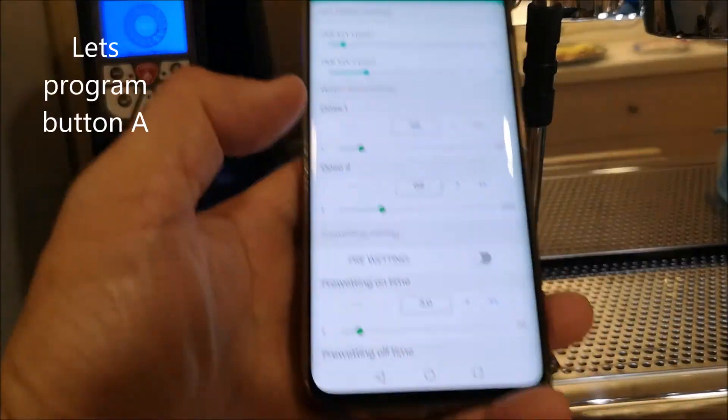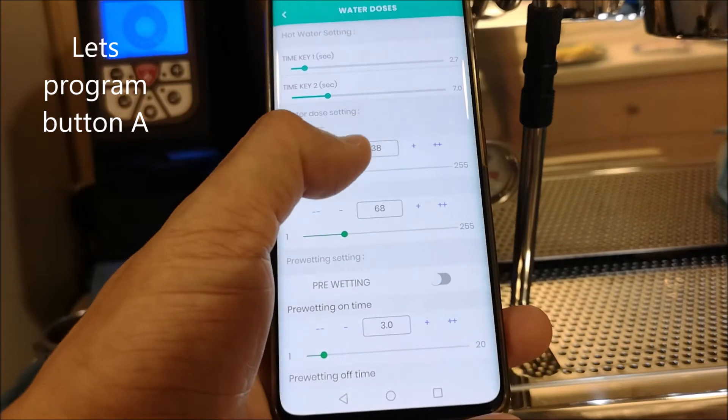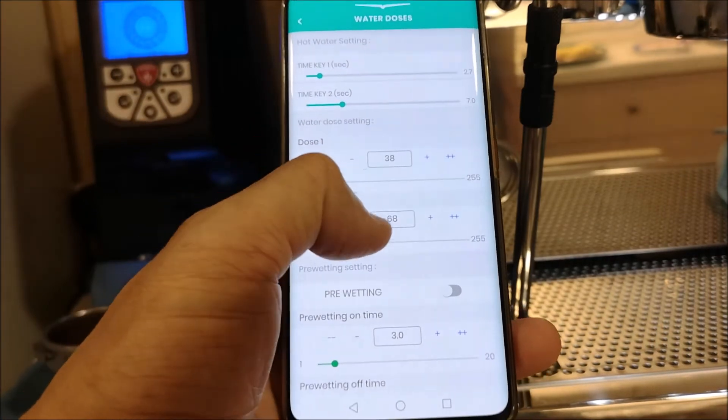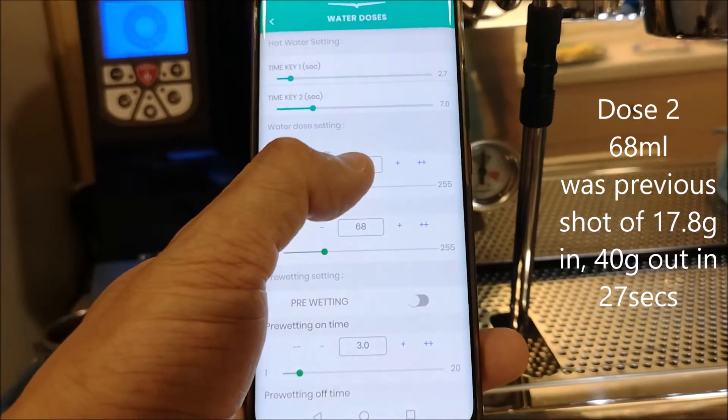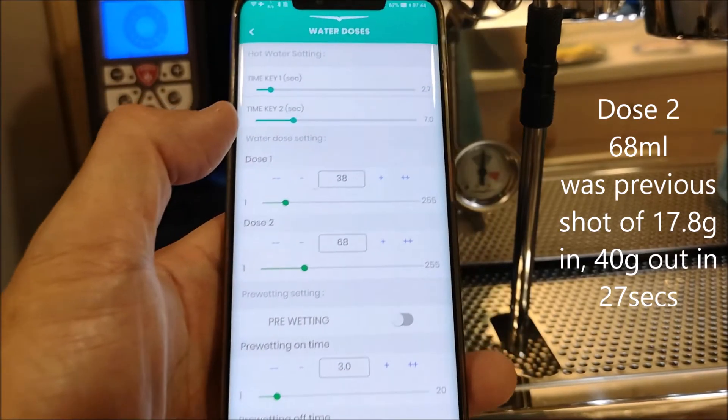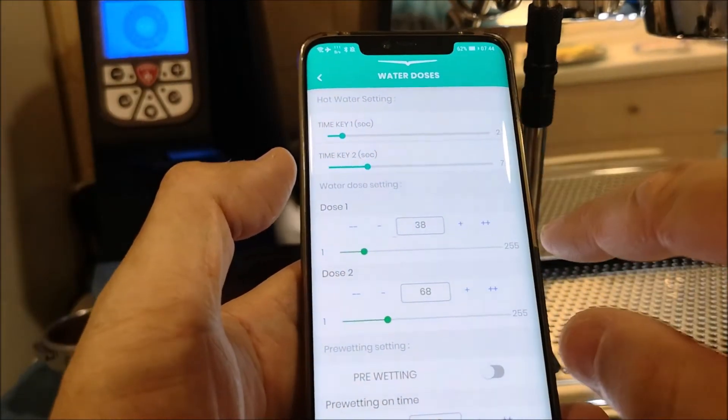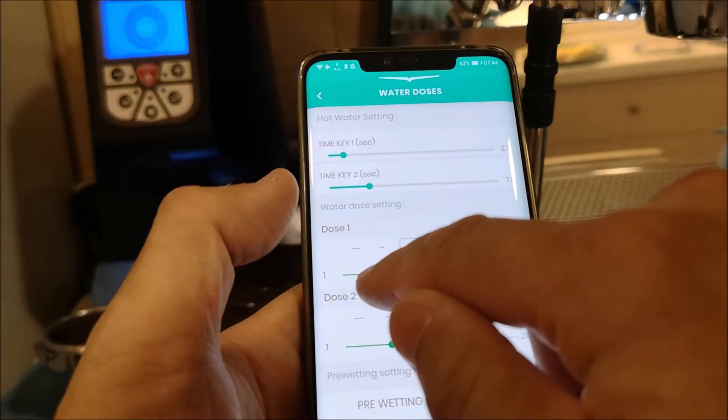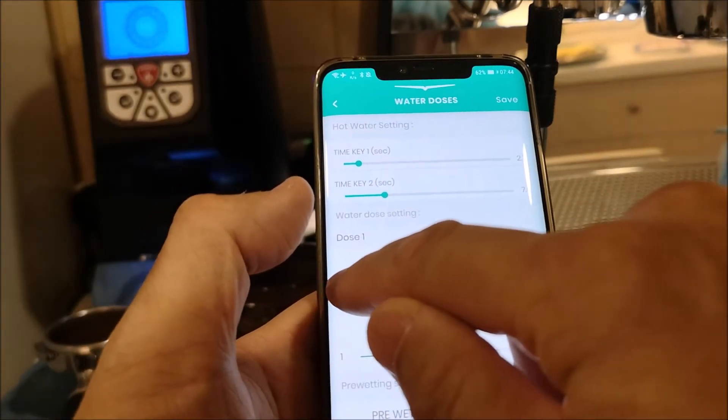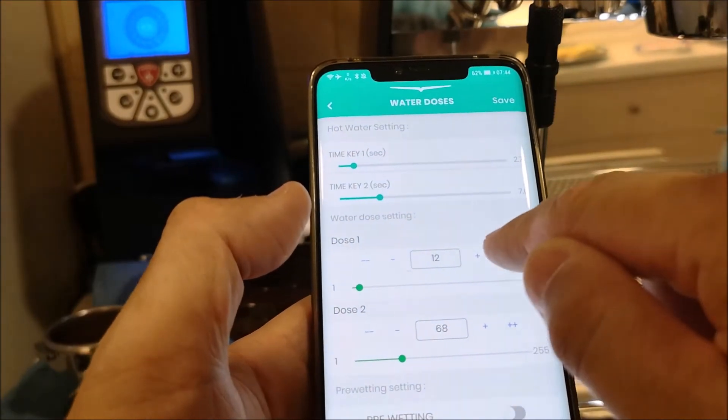So apparently it pushed out 68 milliliters of water to give us 40 grams of espresso at 27 seconds. That was the dose yesterday for 40 grams of espresso. So let's try and change this one. I won't use this function, I'll use the programming function and see how much this gives us. Let's just put it as 10.